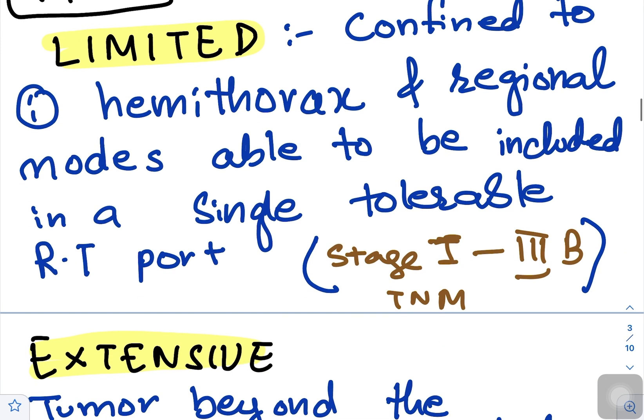Limited disease is confined to ipsilateral hemithorax and regional nodes, able to be included in a single tolerable radiotherapy port. If you go into TNM classification, it is stage 1 to stage 3B.